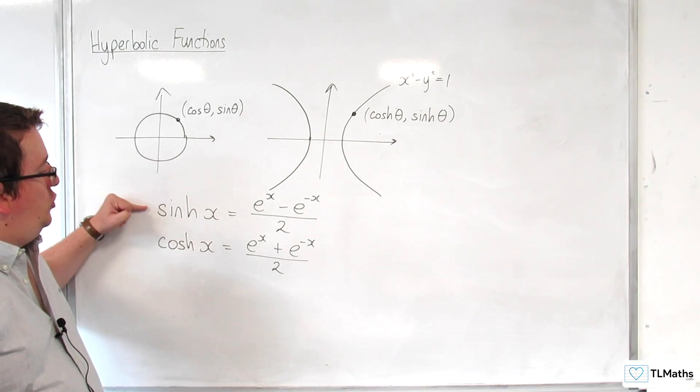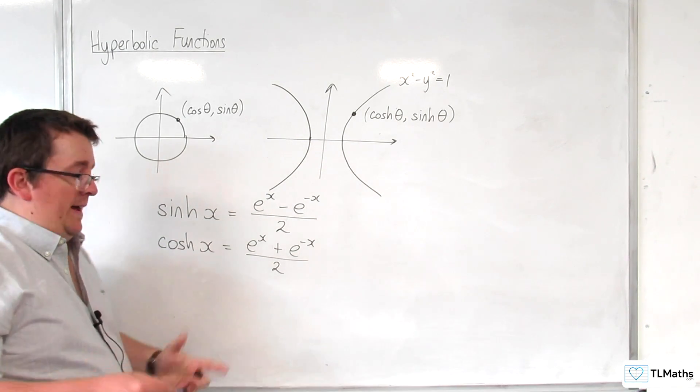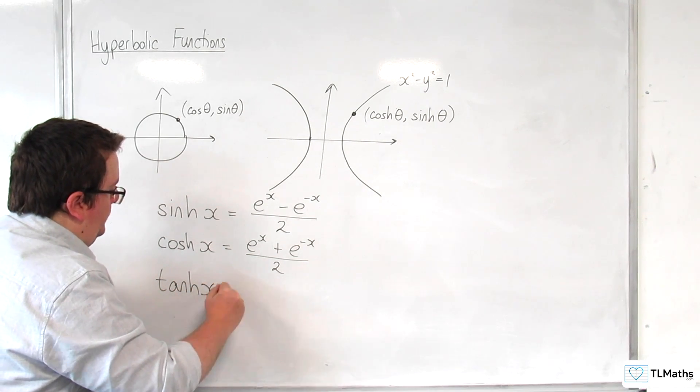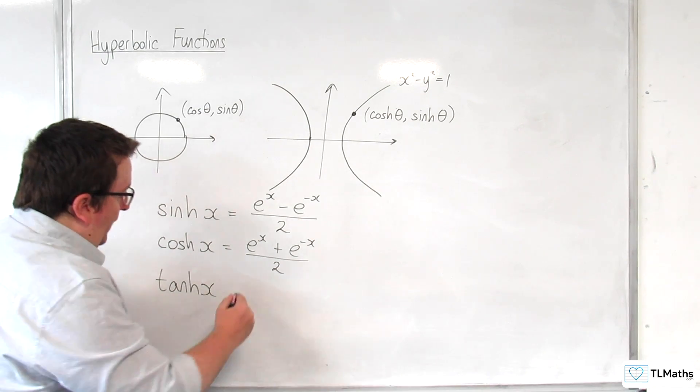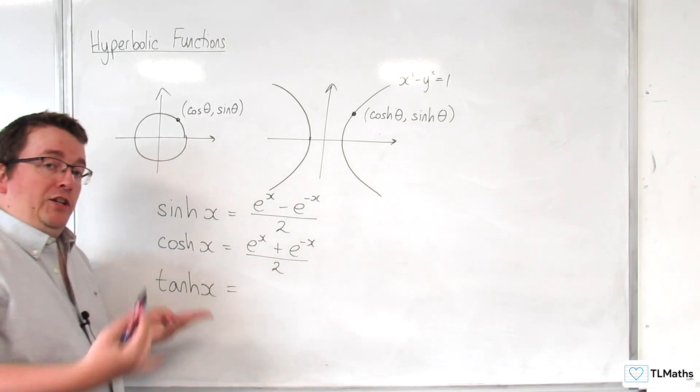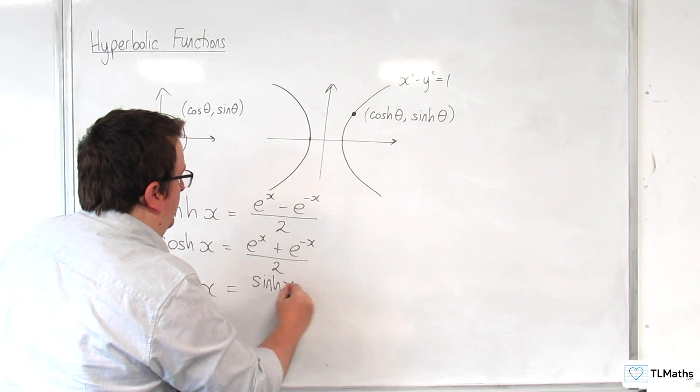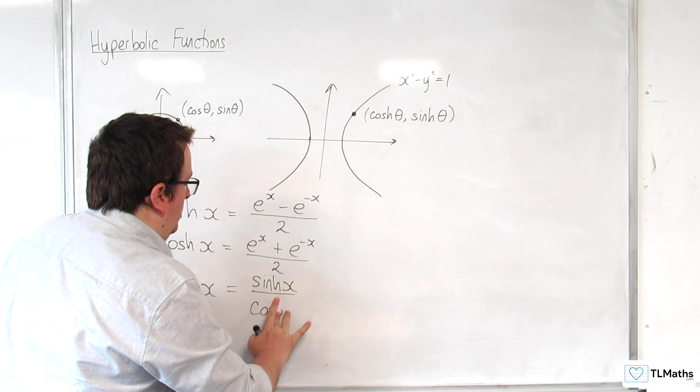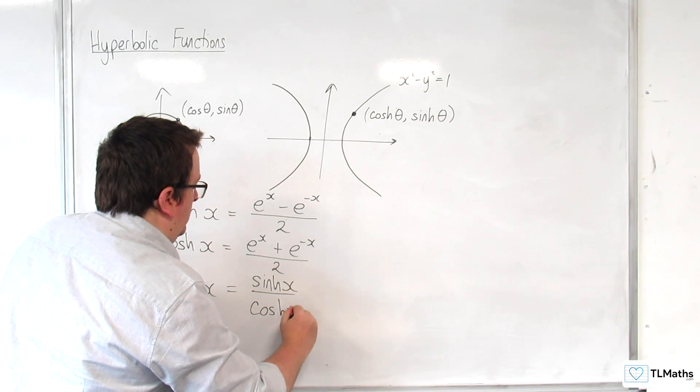So, this is sinh, and this is cosh. And then you've got tanh. Or tanch, depending on who's saying it. And, as you would expect, this is defined as sinh of x over cosh of x, so similar to writing tangent as sine over cosine.